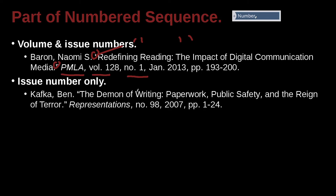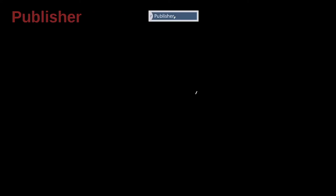Tafka Ben, 'The Demon of Writing: Paperwork, Public Safety in the Reign of Terror.' So this is a chapter in a book, maybe, and here's the book's name — 'Representations' — and this has a number, 98. If this is not a book, then this would be a journal. Since it has a number, I'm guessing it's a journal. But this is part of something bigger; the bigger is the journal, 'Representations.' That is 2000, page 1 to 124 for that article.